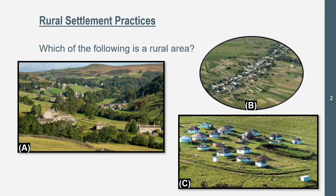Before we get into this, we have three pictures on the screen — A, B, and C. Which of the following is a rural area? More than one can be a rural area as well. Think about it for the next five seconds. Okay, this is a trick question — all of them are rural areas. Now, there are different settlement practices in these rural areas.